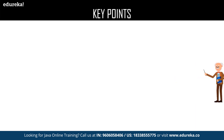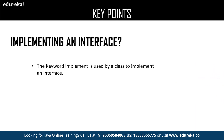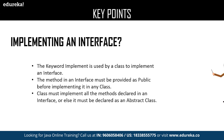The next key point is implementing an interface. The keyword 'implement' is used in a class to implement the methods of an interface. The method in an interface must be provided with an access modifier as public by default. The methods declared in an interface are also considered public. A class must implement all the methods declared in an interface, or else it must be declared as an abstract class.